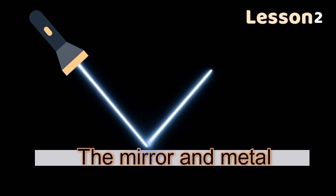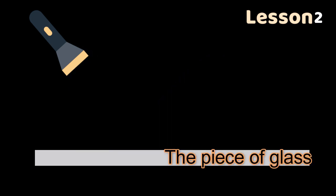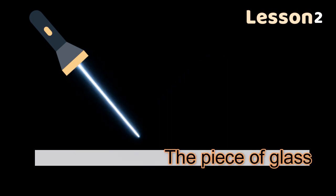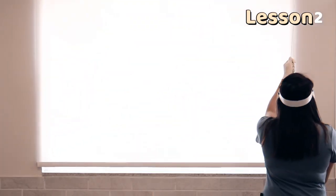The mirror and metal reflect a large amount of light rays because shiny and smooth materials reflect light better than other materials. The piece of glass reflects a very small amount of light rays because transparent materials reflect very little light — that's why we can see through a glass window.